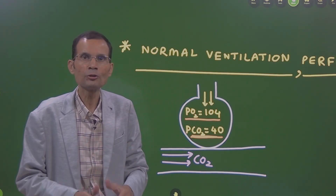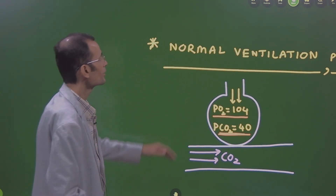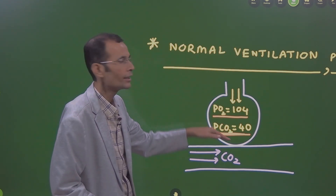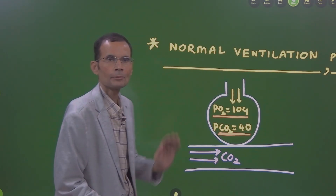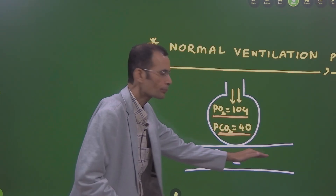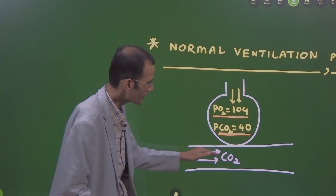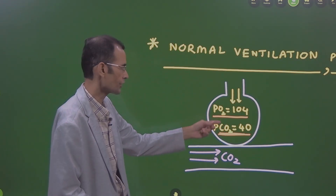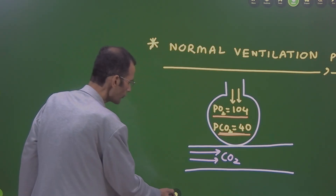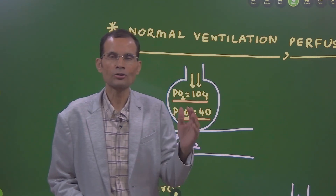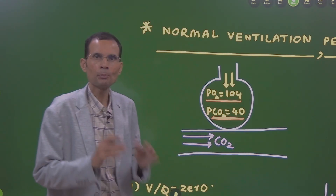Perfusion means blood flow, blood perfusion to the alveoli. As air ventilates the alveolus, it brings new oxygen from the atmospheric air and it will diffuse into the blood. When we talk about perfusion, it is carbon dioxide which is brought by the blood and then diffuses in the opposite direction from the blood into the alveolus.